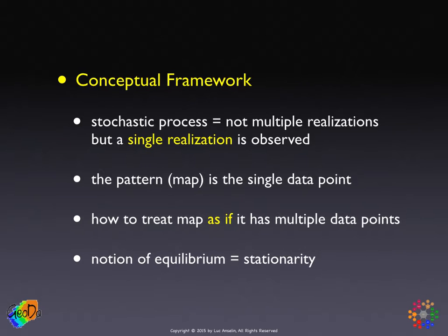So we're stuck. How can we get around that and still treat it as if there are multiple data points, so we can compute means, standard deviations, and things of that nature? The only way we can do this is by assuming a notion of equilibrium — in other words, things don't change very much. And that's the notion of stationarity.